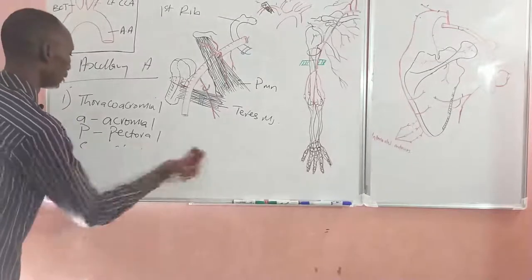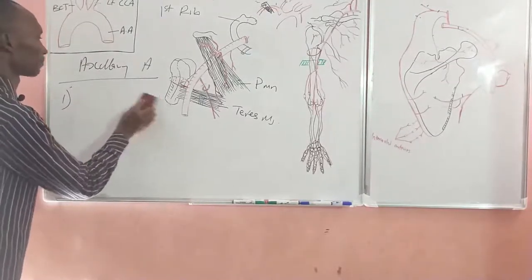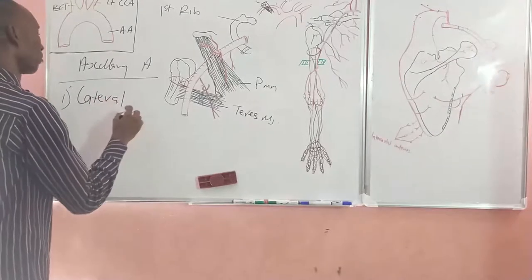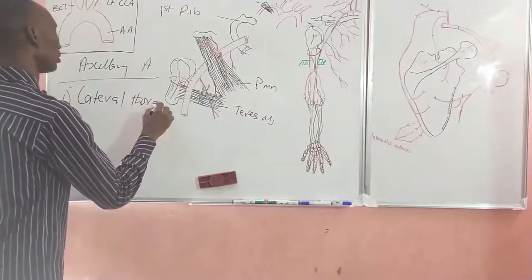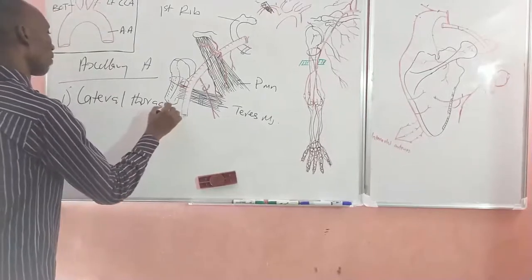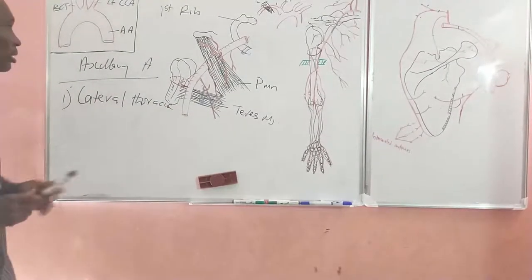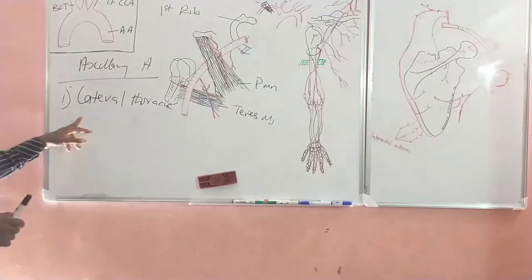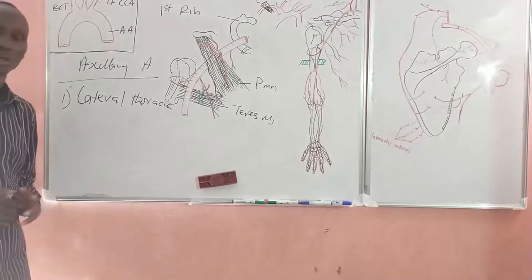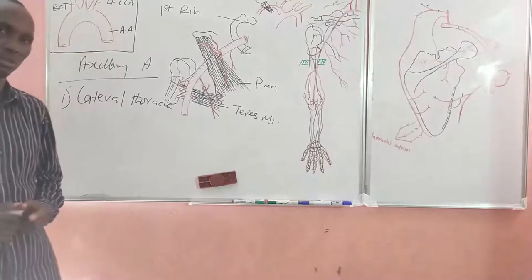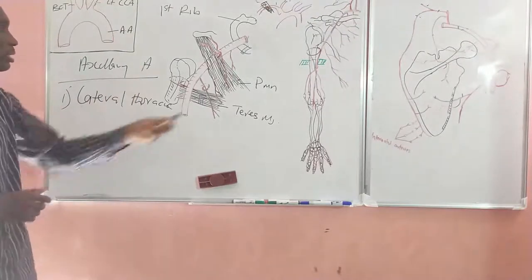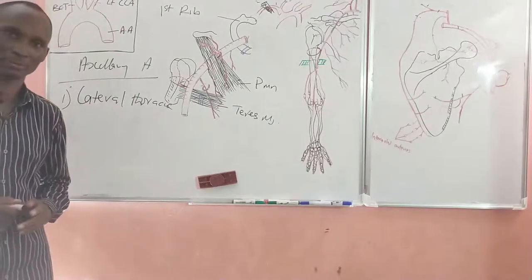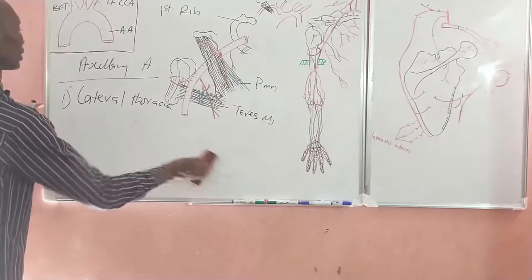The lateral thoracic artery is the second branch of the second part of the axillary artery, arising from the lower border of pectoralis minor. It supplies the pectoralis major and minor muscles, and also the serratus anterior. In females, this artery is well developed because it gives a significant supply to the breast.